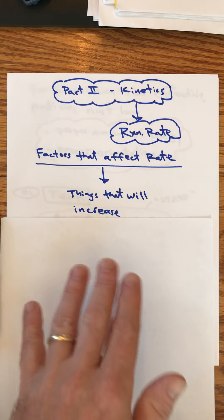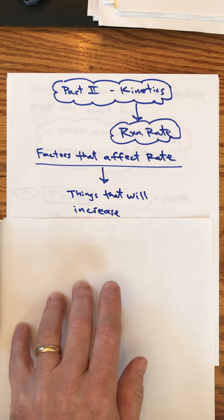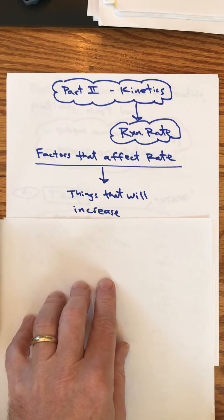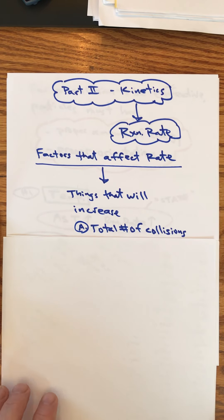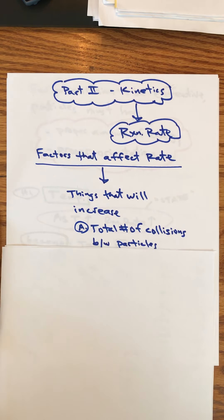How do you increase the rate of a reaction? In order for a reaction to occur, particles have to collide. So if you can increase the total number of collisions between particles, you can increase the reaction rate.